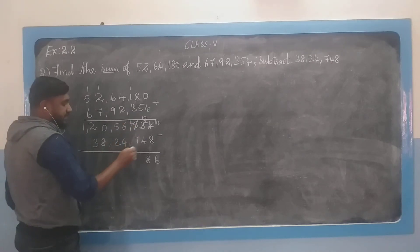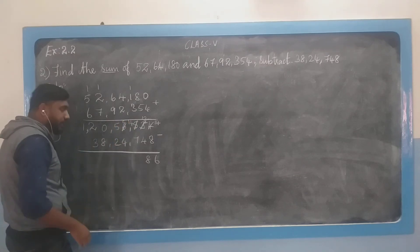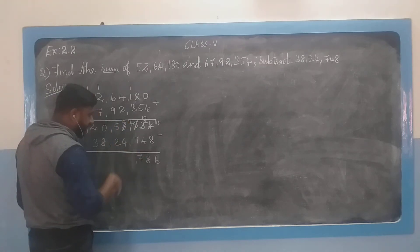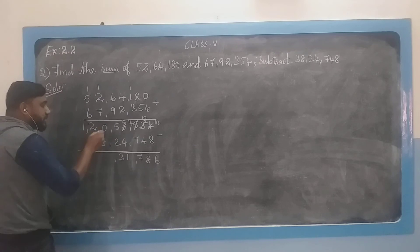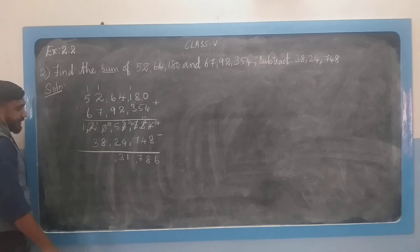4 minus 7 is not possible, so borrowing. 6 will become 5 and 4 will become 14. 14 minus 7 is 7. 5 minus 4 is 1. 5 minus 2 is 3. 0 minus 8 is not possible, so we should borrow. This 2 will become 1 and 0 will become 10. 10 minus 8 is 2.